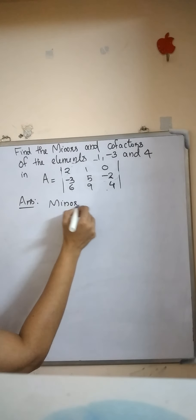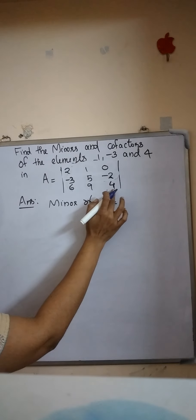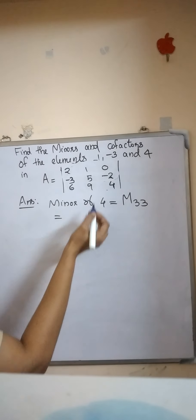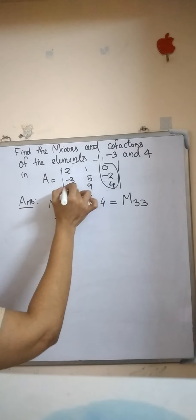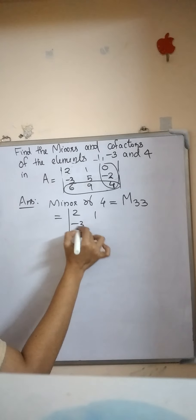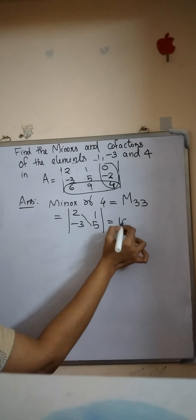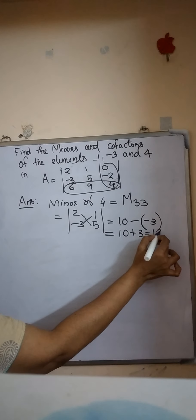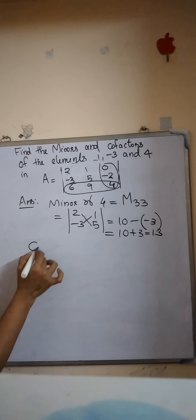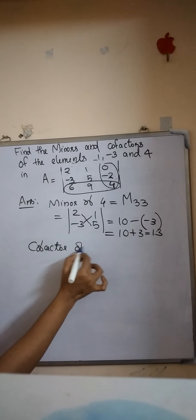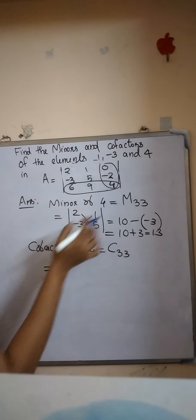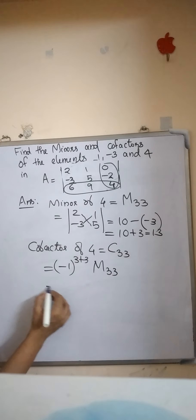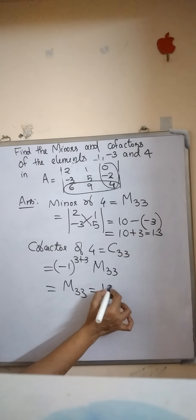Now we find the minor of 4. The element 4 belongs to the third row and the third column, so its minor is M33. By deleting the third row and the third column, we get the determinant 2, 1, minus 3, 5. That equals 2 into 5 minus minus 3 into 1, which is 10 plus 3, equals 13. The cofactor of 4 is C33, which equals minus 1 raised to 3 plus 3 into M33. Minus 1 raised to 6 is 1, so the cofactor is the same as the minor, giving 13.